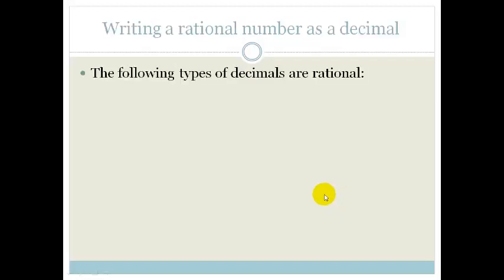Let's look at writing a rational number as a decimal. The following types of decimals are rational. For example, 0.8. The reason that is rational is because we can actually write that as 8 over 10. So, in other words, decimals that end, decimal numbers that end are rational.